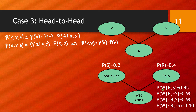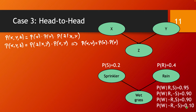We have the probability of the grass getting wet given a rainy day with the sprinkler on, set to 0.95. Then the probability of grass being wet given a rainy day but with the sprinkler off. Then a non-rainy day with the sprinkler on. And finally a non-rainy day with the sprinkler off, where the probability of the grass getting wet is set to 0.1. This accounts for the possibility of other causes making the grass wet that are not described by this model.